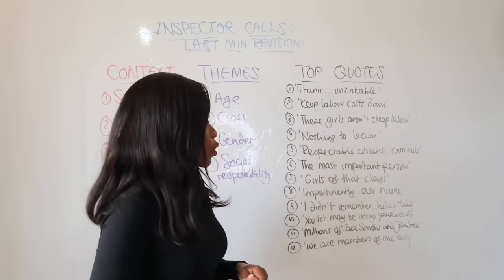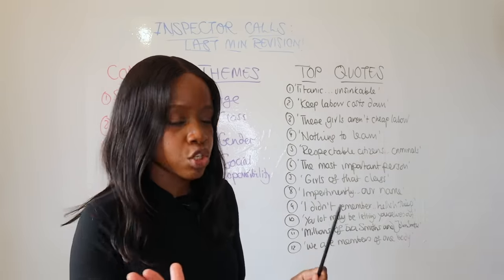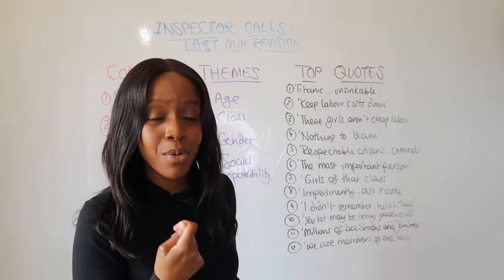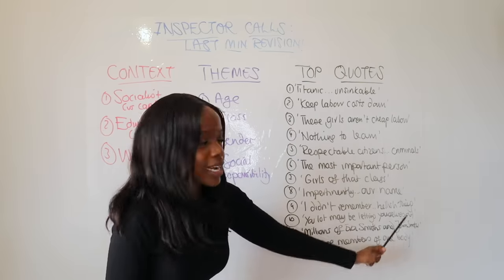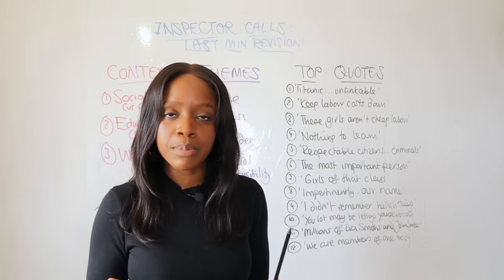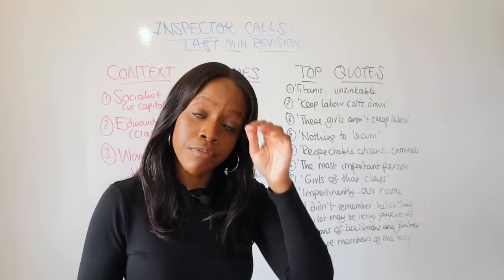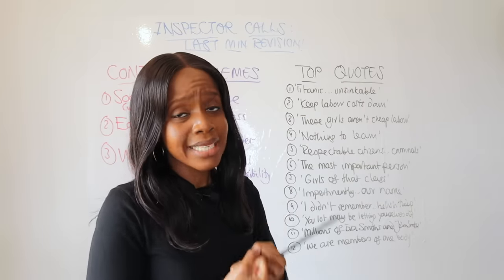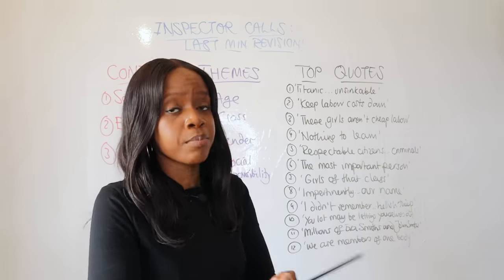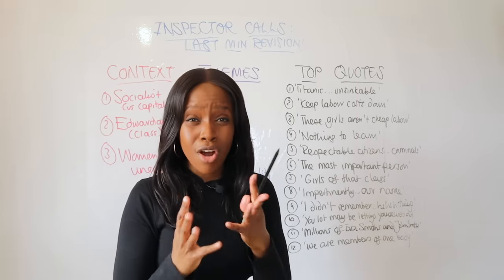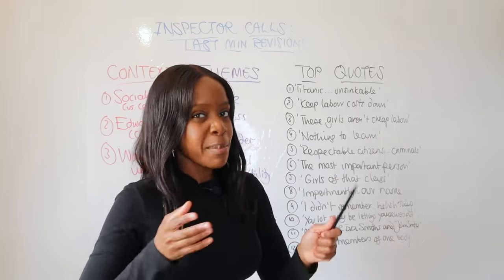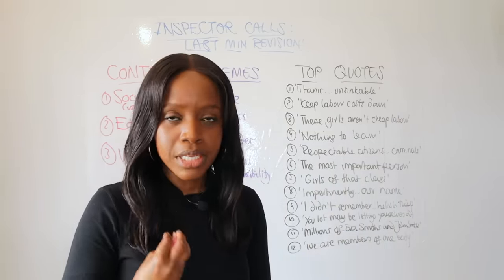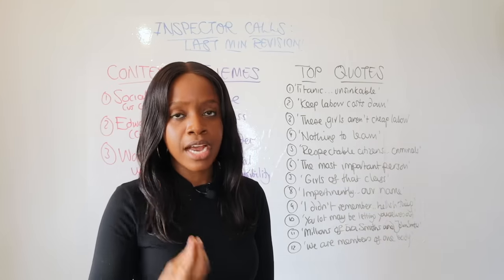For Eric, the first quotation is when he admits regarding his rape of Daisy: 'I didn't even remember — that's the hellish thing.' This shows Eric realizes how selfish and horrible he was towards Daisy — he exploited her as a woman when she was working as a prostitute. The second quotation shows that Eric arguably changes the most of all the characters, closely followed by Sheila. At the end he says, 'You're not letting yourselves out nicely, but I can't' — showing he takes responsibility for his actions and wants to change.